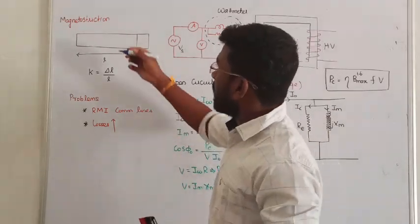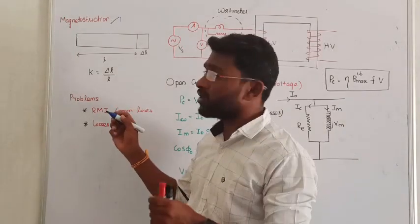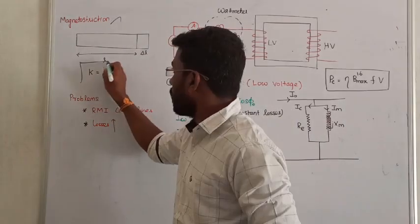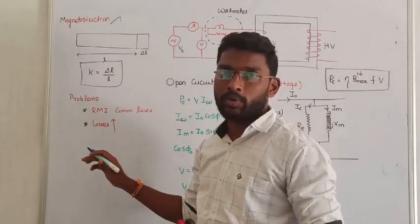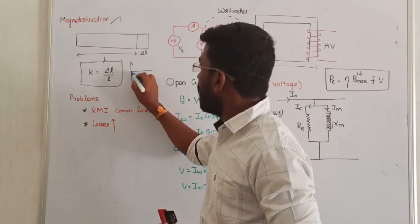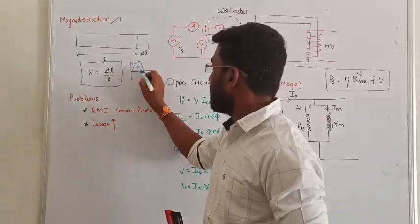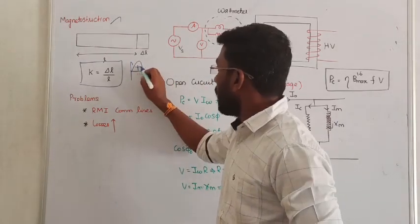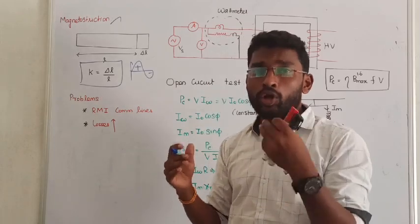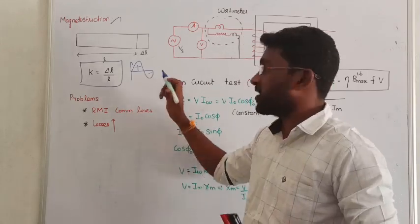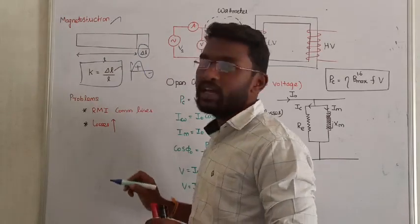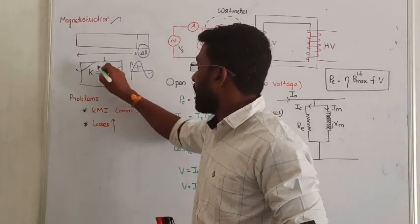That is called magnetostriction. In the transformer, magnetostriction causes a humming sound. We can define K as the magnetostriction coefficient. When we apply an alternating AC signal — positive and negative — for the positive cycle the core will be magnetized, and for the negative cycle the core will be demagnetized. During this process the core will vibrate, producing a humming sound. The actual core dimension will change due to magnetization and demagnetization; the core will expand by dL due to the actual length of the core. That is called the magnetostriction coefficient.